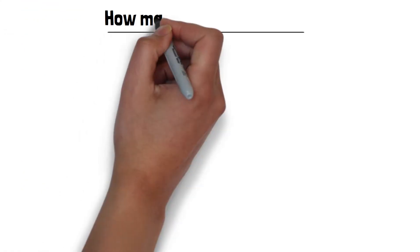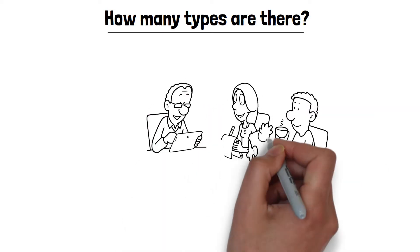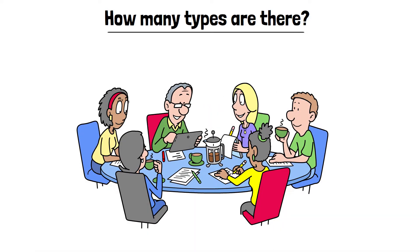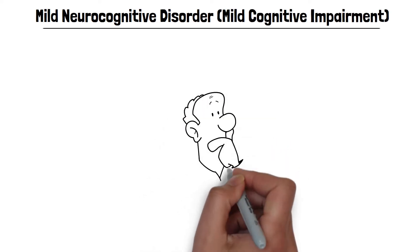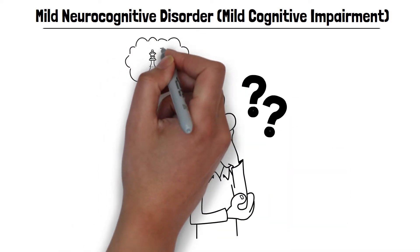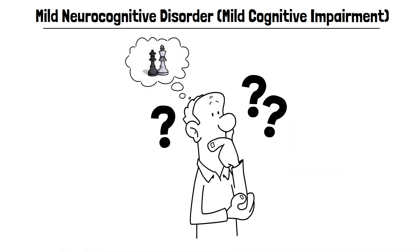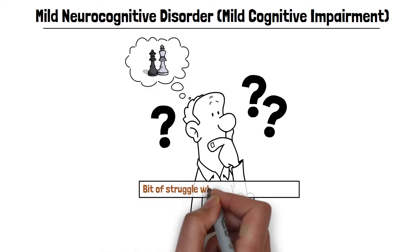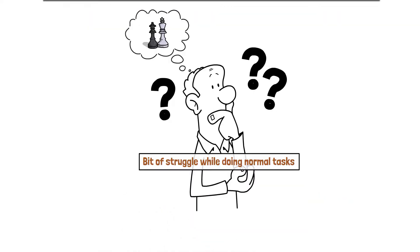Now let's talk about its types. Broadly, neurocognitive disorders are divided into two main types. First, mild neurocognitive disorder, mild cognitive impairment. In this, a person has some difficulty with memory and thinking and understanding. But it is not so severe that the person cannot perform their daily activities. There's just a bit of struggle while doing normal tasks.